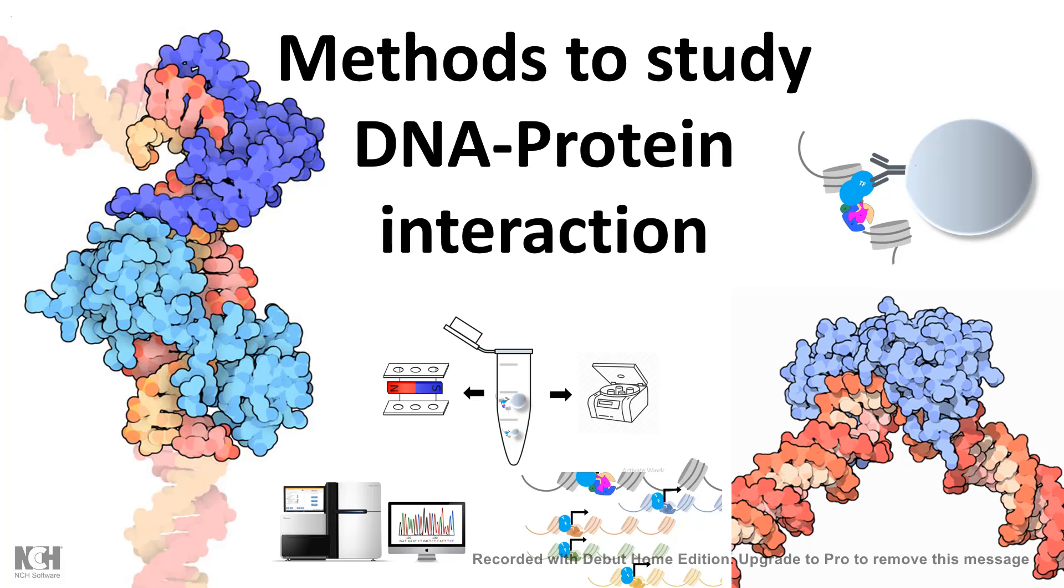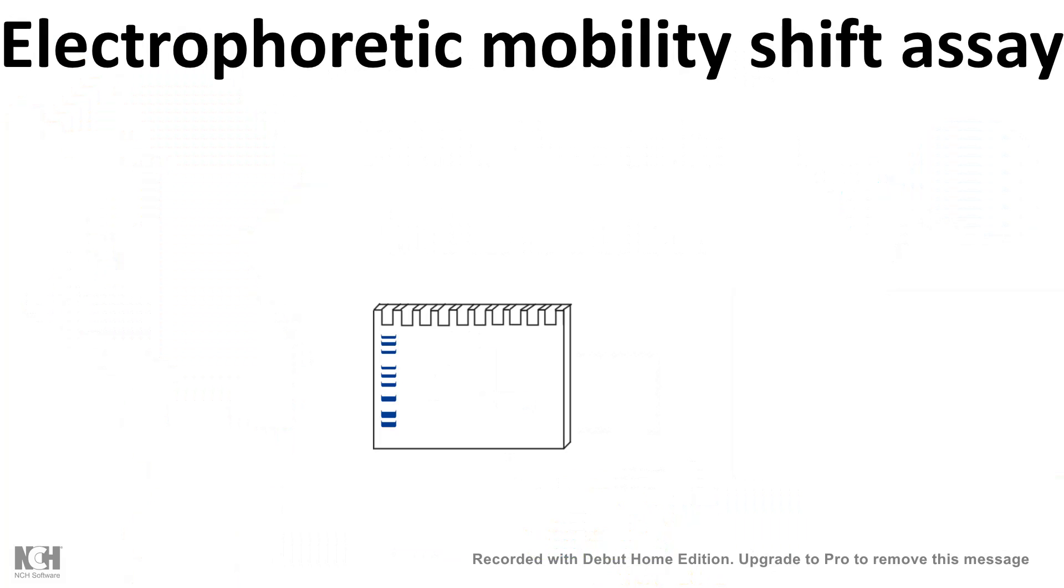A simplest method is electrophoretic mobility shift assay. We all know if we load DNA on a gel it would move based on its size. So let's say we have our sample where we have only purified DNA and we run it, and that has a characteristic band.